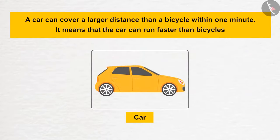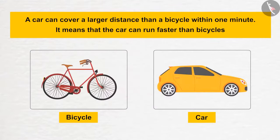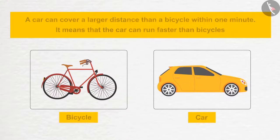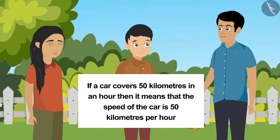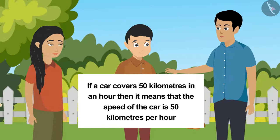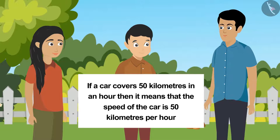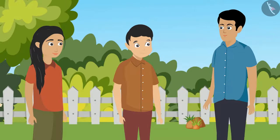For example, a car can cover a larger distance than a bicycle within one minute. It means that the car can run faster than a bicycle. Is there any standard unit of measurement of speed as well? Yes, if a car covers 50 kilometers in an hour, then it means that the speed of the car is 50 kilometers per hour. So, the standard unit of measurement of speed is kilometers per hour.